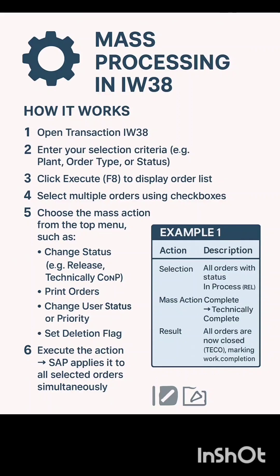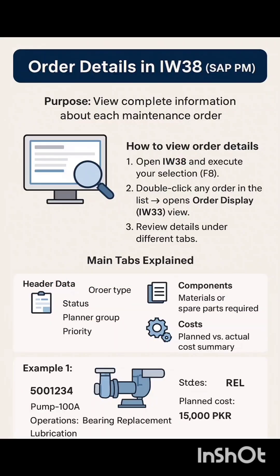Mass processing of maintenance orders can also be done in IW38. Open transaction IW38, enter your selection criteria, and click Execute to display the orders list. Select multiple orders using checkboxes, then choose a mass action from the top menu — such as changing status (release, technical completion, etc.), printing orders, changing user status or priority, or setting a deletion flag. Then execute the action and SAP applies it to all selected orders simultaneously. For example, selecting all orders and choosing 'Complete Technically' will convert all selected orders to technically complete status.